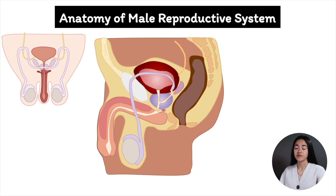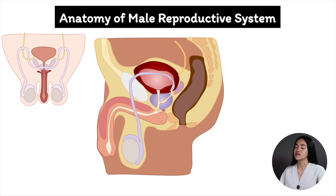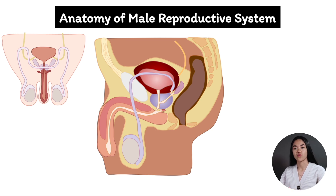The urinary bladder and the urethra are not part of the reproductive tract. But the reproductive and urinary tracts do merge when the ejaculatory ducts join the urethra in the prostate. Now let's start with the external organ of the male reproductive system — the penis.